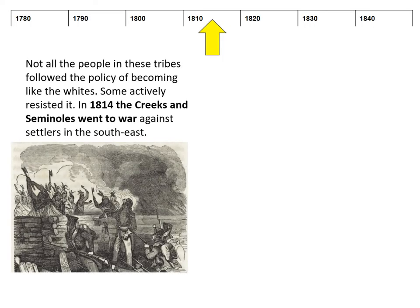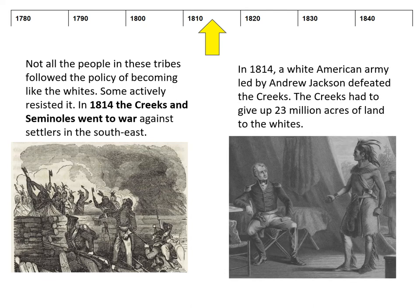Not all tribes followed the policy of becoming like whites, and some actively resisted it. In 1814, the Creeks and Seminoles went to war against the settlers in the southeast in what was sometimes known as the Creek War or the Red Stick War. The Native Americans were defeated by the white American army, led by Andrew Jackson, who becomes president later on. As a result of that war, the Creeks gave up 23 million acres of their land to the whites.